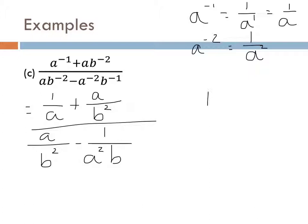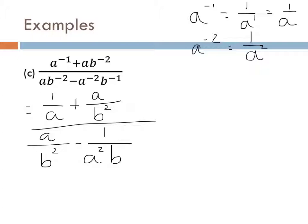Doing long division on variables follows the exact same procedure, except you'll have letters instead of just numbers — the process is identical. Here are vocabulary terms: the divisor is what you're dividing by, the quotient is the answer on top, the remainder is what's left over, and the dividend is the thing you're dividing — your starting point. Make sure your powers are ordered from highest to lowest, just like numbers go from hundreds to tens to ones.